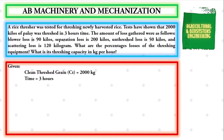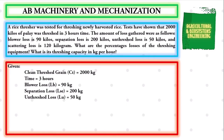The time is 3 hours. The blower loss, symbolized by LB, is 90 kilograms. The separation loss, symbolized by LSE, is 200 kilograms. The unthreshed loss, with symbol LU, is 50 kilograms, and the scattering loss, symbolized by LSC, is 120 kilograms.